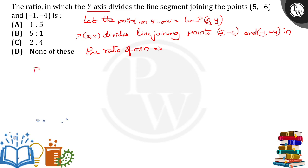So we have to apply section formula where P 0 comma y is equal to, the formula m x2 plus n x1 by m plus n comma m y2 plus n y1 by m plus n.